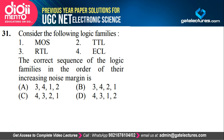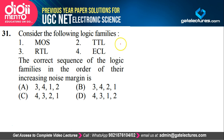Look at the question. They have given 4 logic families: MOS, TTL, RTL, and ECL, and they are asking the correct sequence of these logic families in order of their increasing noise margin. One thing to remember is you cannot learn the specification or values of noise margin for all these families. What you can remember is their relative noise margins — just remember the comparison. Questions from logic families are asked about comparisons only: which logic family has the least or which has the most.